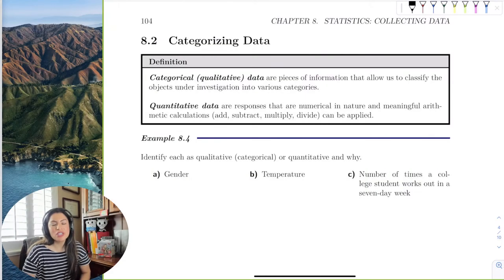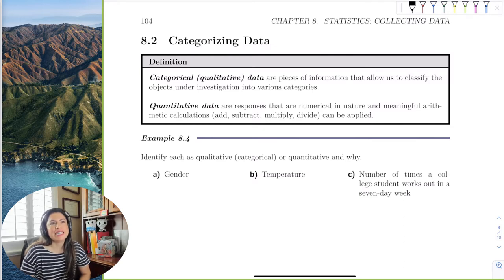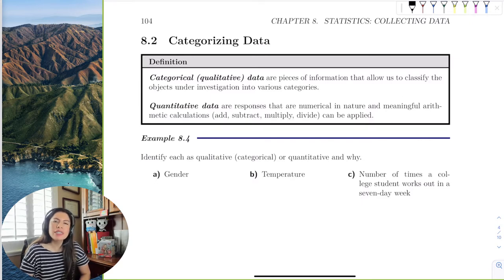Okay, so in the previous section, we discussed population and parameters and sample and statistics. And in this section, it's data. And so with the data, there's different types of data we can collect. So we have two types, categorical and quantitative.